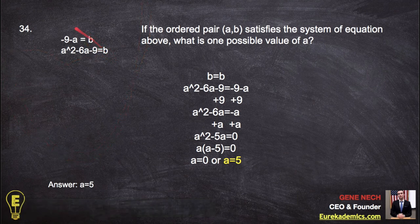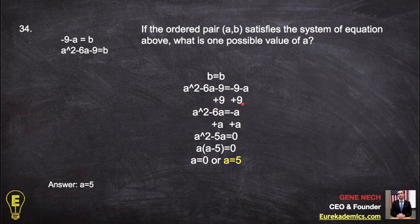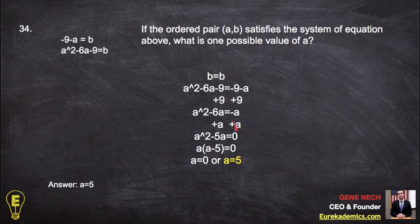Now this equals b, we're gonna hinge the whole answer on it. Because b equals b. So we're gonna set this side equal to that side. Plus 9 plus 9. That gets rid of this and gets rid of that too, which is nice. So you're left with a squared minus 6a equals negative a. Plus a plus a. You're left with 0 here. So you have a squared minus 5a equals 0. Factor out the a.